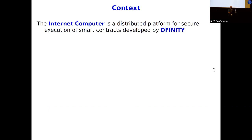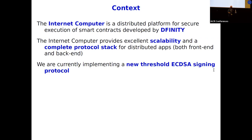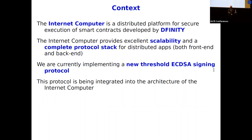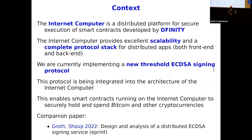Let me start with some context. I'm currently at an organization called DFINITY which is building something called the Internet Computer — a distributed platform for executing smart contracts in a secure way. What we want to do is build a new threshold ECDSA signing protocol, which we're currently integrating into our larger protocol. We're doing this because we think it might be a good idea to allow smart contracts running on the Internet Computer to securely hold and spend Bitcoin and other cryptocurrencies, and most of these currently still use ECDSA.